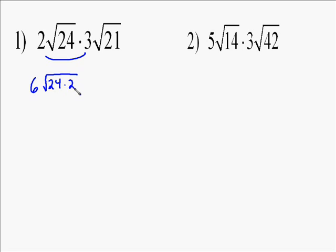When you multiply radicals, first multiply what's outside the radicals, so 2 times 3 equals 6. Then multiply what's inside the radical and put them in the radical, so in this case 24 times 21.